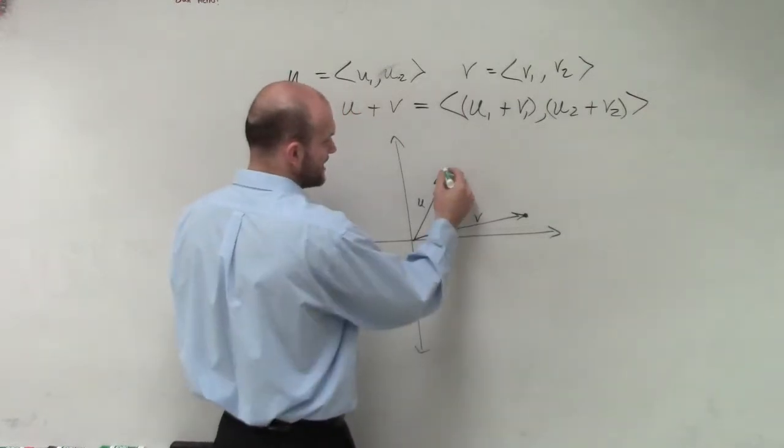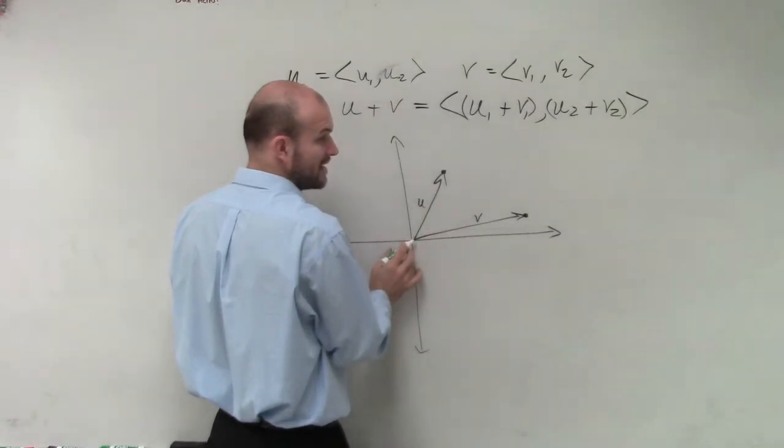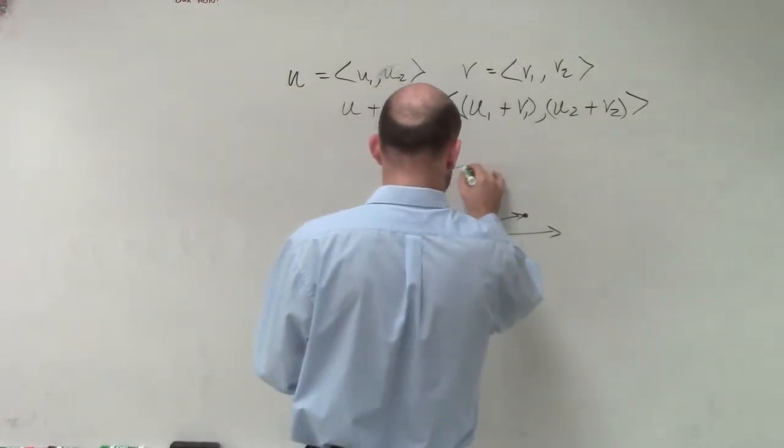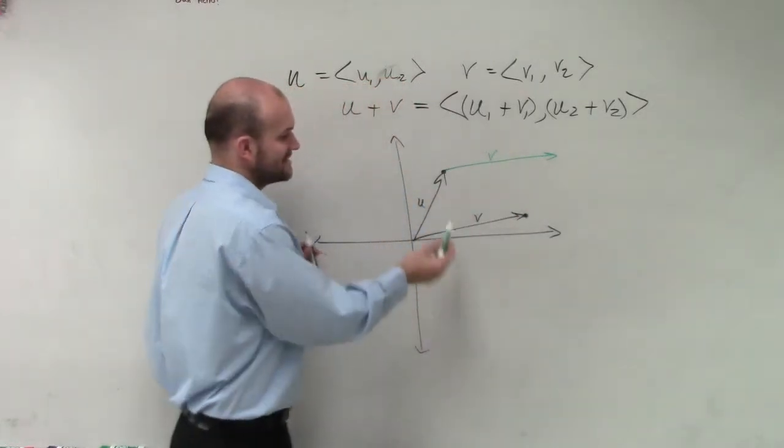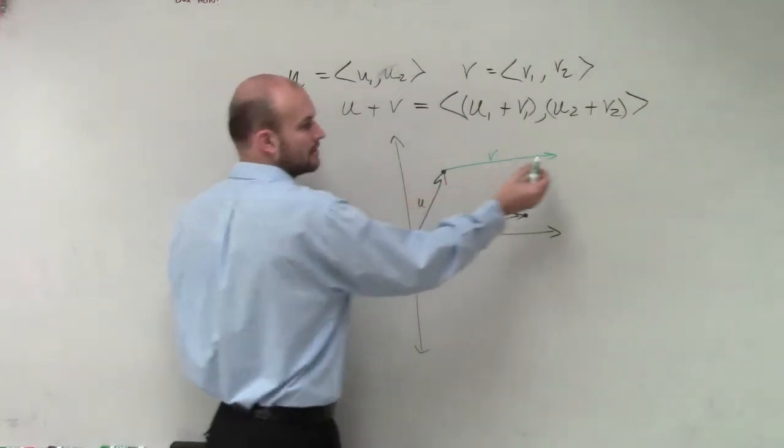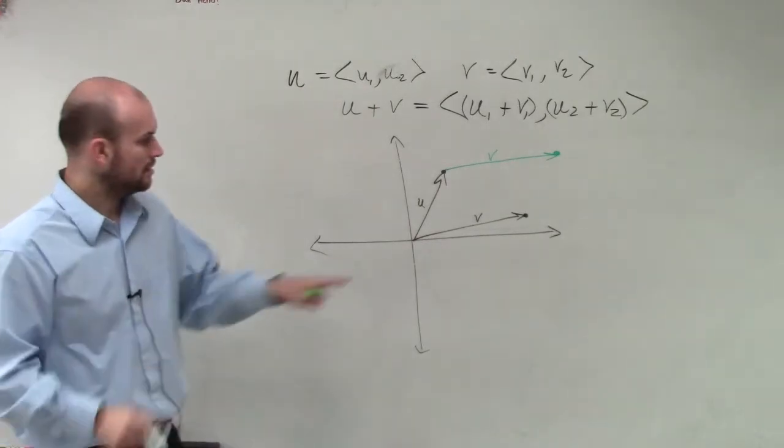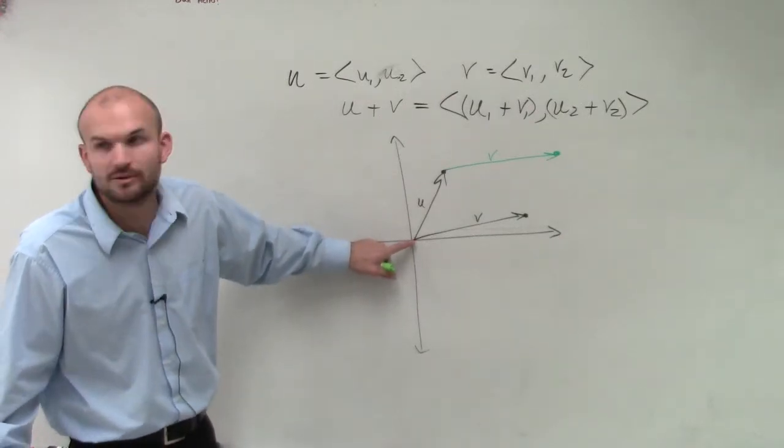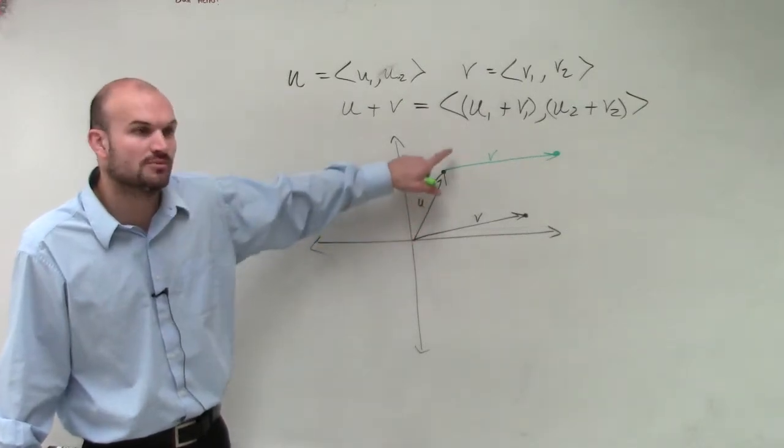What I can do is I can either take u plus v, so you're going to take the initial point of your second vector and add it to the terminal point of your other vector. What I do is I take the initial point and I put it at the end of the terminal point of the other vector. Okay? I just take this initial point and now they share the same initial point, right? Because they're both component vectors. But then I just take the initial point and put it at the terminal point of the other vector.